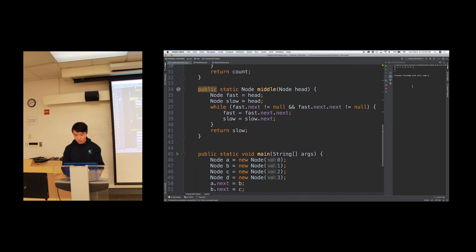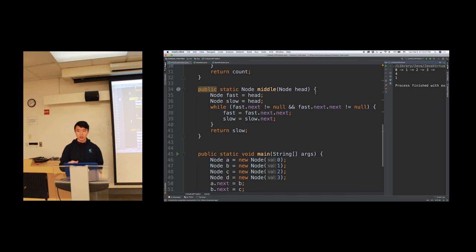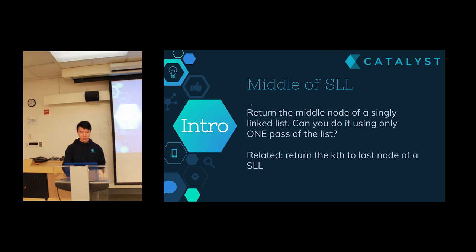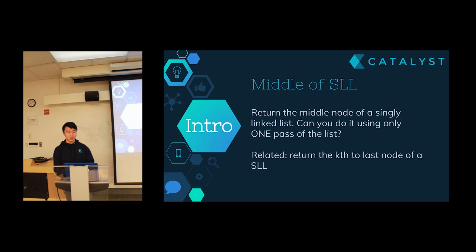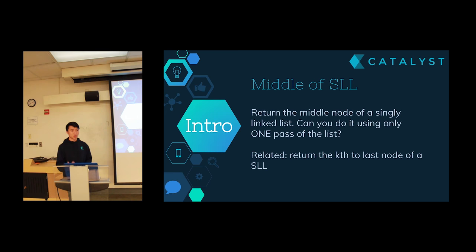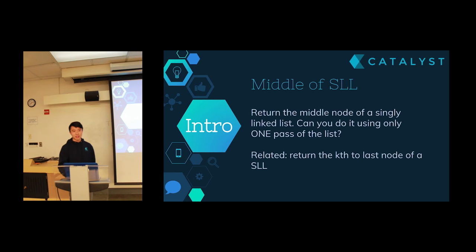If the interviewer wanted us to round up instead, we'd need a separate implementation. But this is a way to return the middle node of a linked list with only one pass. This fast-and-slow traverser trick is very common in linked list problems. A lot of linked list solutions are what I'd call tricks — things you wouldn't normally think of yourself, but because everyone studies interview problems these days, you kind of have to know them.